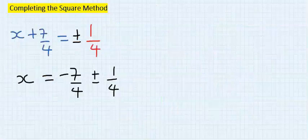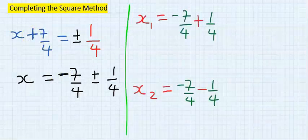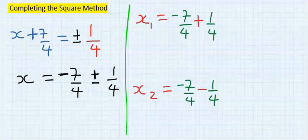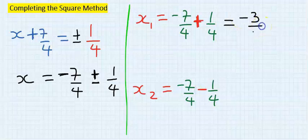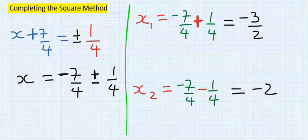Next, isolate x by moving seven over four to the other side, where it becomes minus seven over four. One answer uses the plus and the other uses the minus. This gives minus three over two and minus two. These are our two answers.